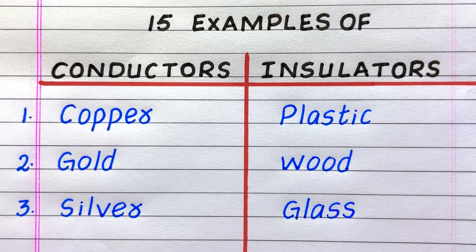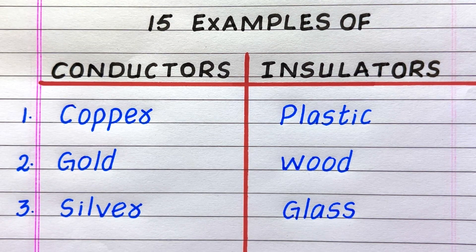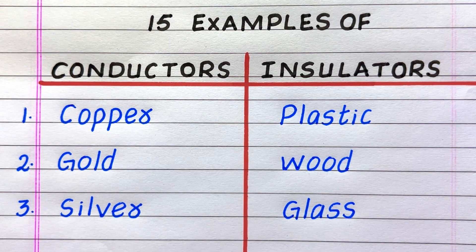First example of a conductor is copper, second gold, third silver. First example of an insulator is plastic, second wood, third glass.